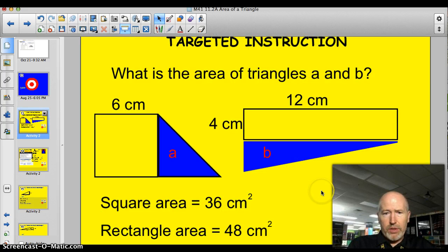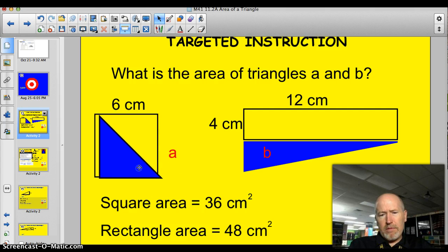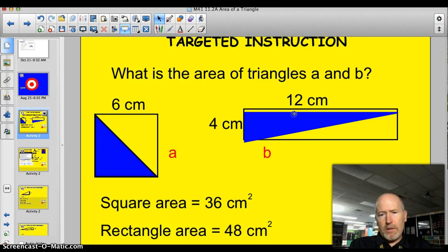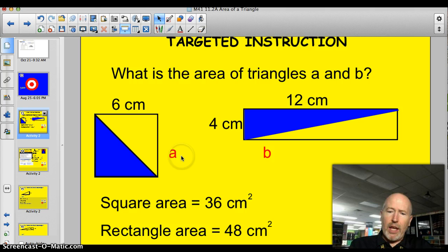Alright, take a look at these triangles. What is the area of triangles A and B? See if you can figure it out. Yeah, there's enough information there to figure it out. I know what you're thinking, but go ahead. Alright, did you figure it out? Would it help if I did this? Now think about it. Can you see what the area of triangle A is?